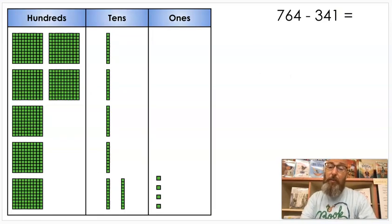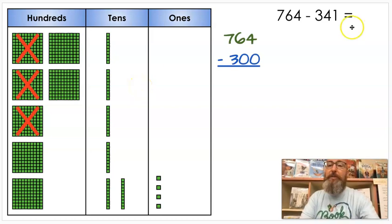We're going to do a couple with regrouping and a couple without just to make sure you understand the process. So let's do our first one: 764 minus 341. Just like with models, we're going to build it first. We have 700, we have 60, and we have 4. The first thing I'm going to do is subtract the hundreds place. I look here in the subtrahend and that number is a 3, that's 300. So I'm going to cross out three hundreds and I'm going to subtract 300. When I subtract 300, I have 464.